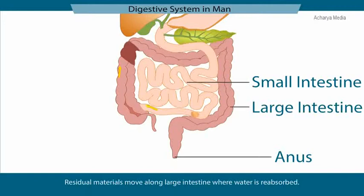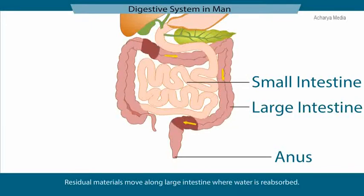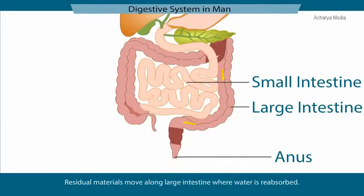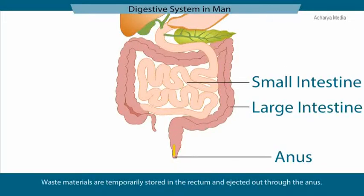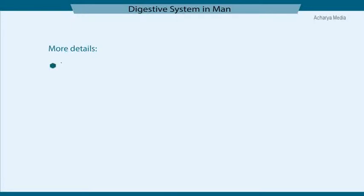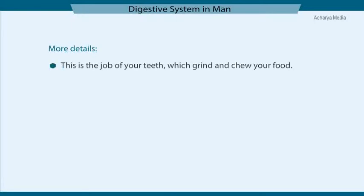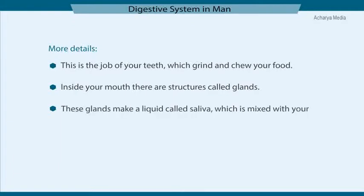The food is then moved to the large intestine, where water is reabsorbed from the residual material. The waste materials pass to the anus after temporarily being stored in the rectum, and the anus pushes the waste materials out of the body. The job of your teeth is to grind and chew your food. Inside your mouth, there are structures called glands. These glands make a liquid called saliva, which is mixed with your food to help it slip down.